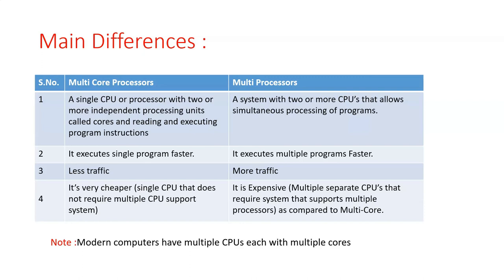That is an advantage. I think now you can understand what a multi-core processor is, how it works, and its advantages; what a multi-processor system is, how it works, and its advantages; and finally the differences between multi-core processors and multi-processors.